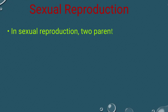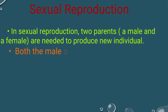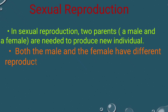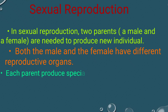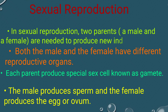In sexual reproduction, two parents — a male and a female — are needed to produce new individuals. Both the male and the female have different reproductive organs. Each parent produces special sex cells known as gametes. The male produces sperm and the female produces egg or ovum.